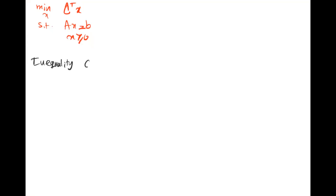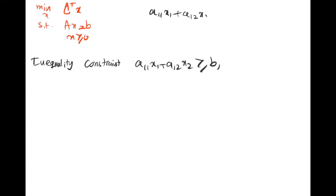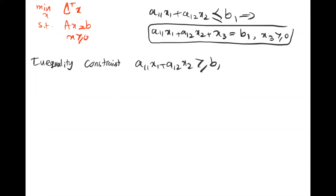Now let's talk about special scenarios where the optimization problem is not given in the standard format. So far we've seen: minimize c^T x subject to Ax = b with x positive. We now want to see what happens when we have inequality constraints. For a constraint like a11*x1 + a12*x2 ≤ b1, we add a positive slack variable x3 to transform it into an equality constraint.